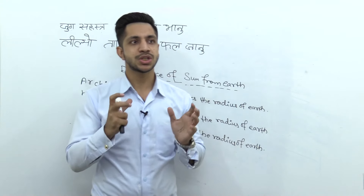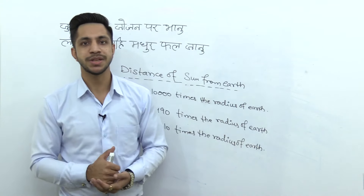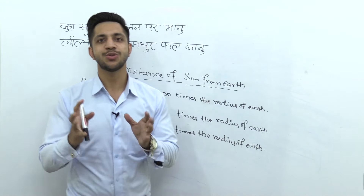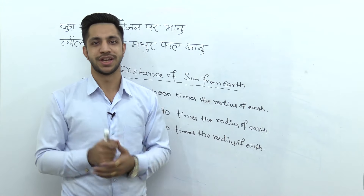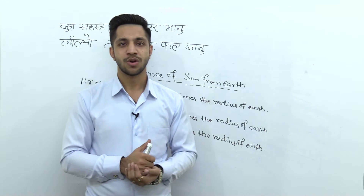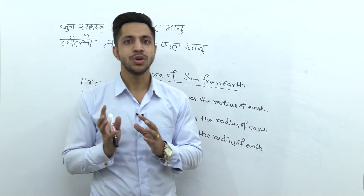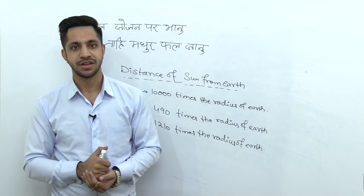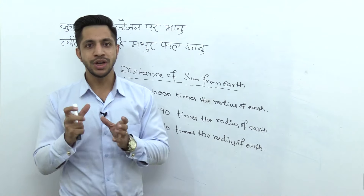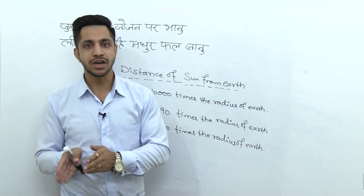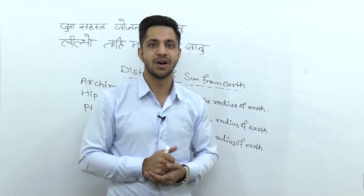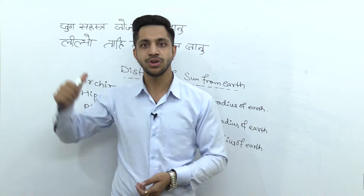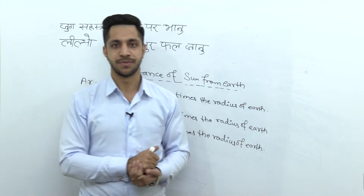Hanuman ji ne jab Surya Dev — that means the sun — ko dekha, toh unko laga ki yeh toh koi fruit hai, aur woh uski taraf ko jump kar gaye, chalang laga di unhone. Ab unhone jo earth se distance cover kiya us sun tak, woh yahaan likha gaya hai Hanuman Chalisa mein.